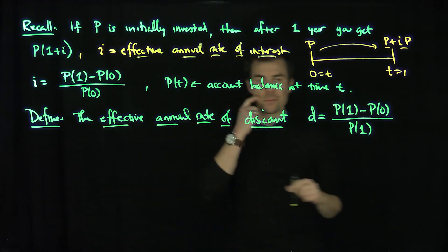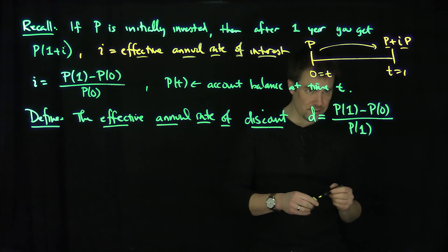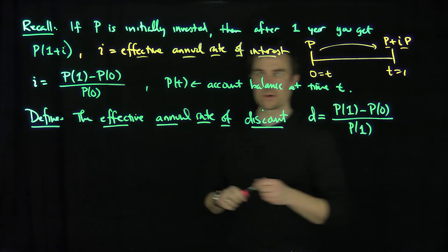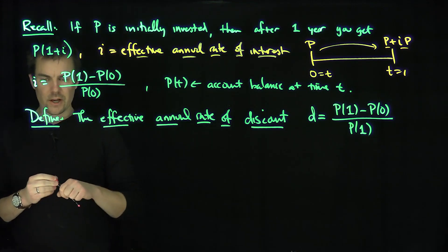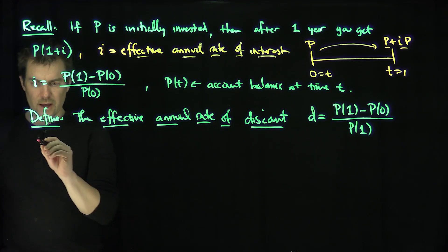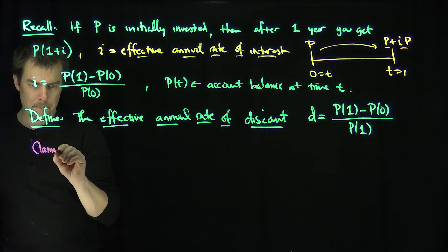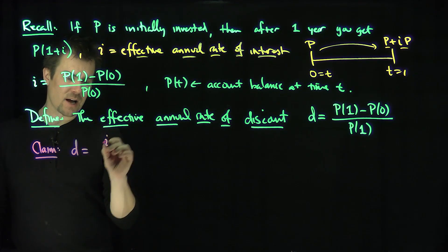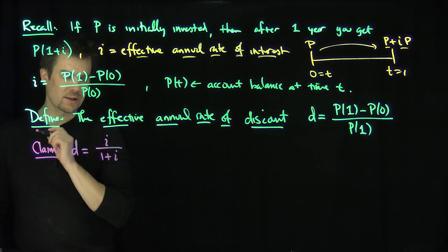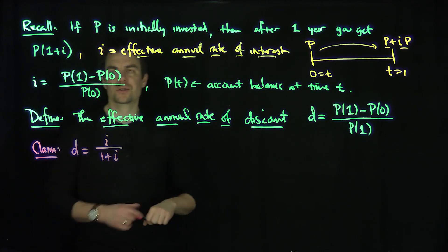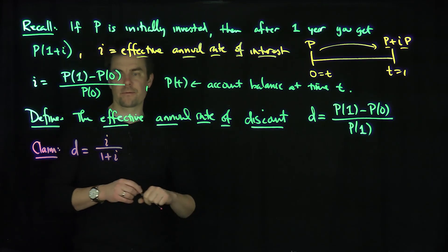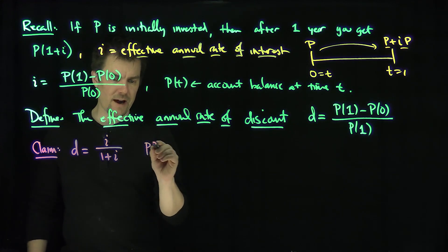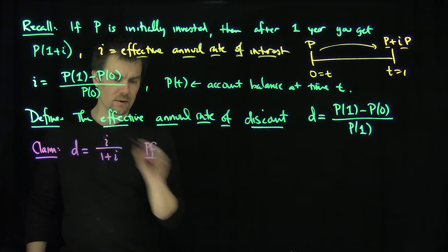Now there's a relationship between discount and interest. We claim that d, the effective rate of discount, is i over (1 + i). Let's verify this and see how we can derive this formula. Here is the proof.